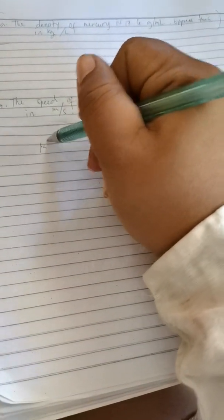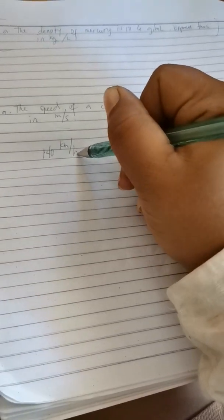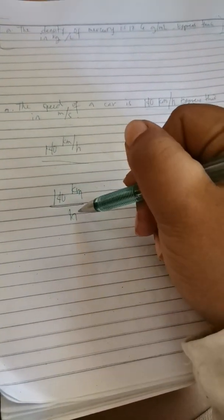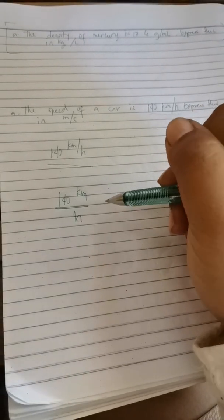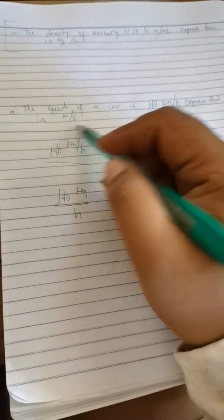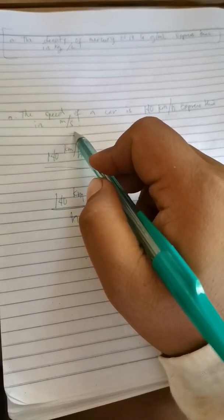So we have, that means we have to convert. First we have to write 140 kilometer per hour, or it's easier if like this: 140 kilometer per hour. So we have to turn that kilometer into meter and hour into second - convert kilometer into meter and hour into second.